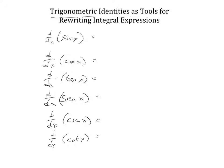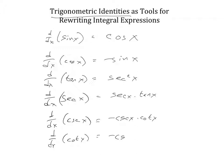You should recall that the derivative of sine x is cosine x, the derivative of cosine x is negative sine x, the derivative of tangent x is secant squared x, the derivative of secant x is secant x times tangent x, the derivative of cosecant x is negative cosecant x times cotangent x, and the derivative of cotangent is negative cosecant squared x. This should all be review and it's all critical so that we can use u substitutions when necessary.